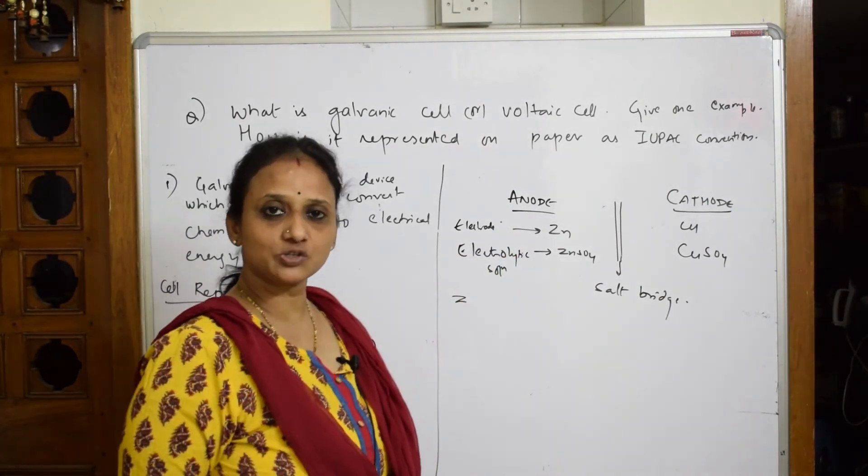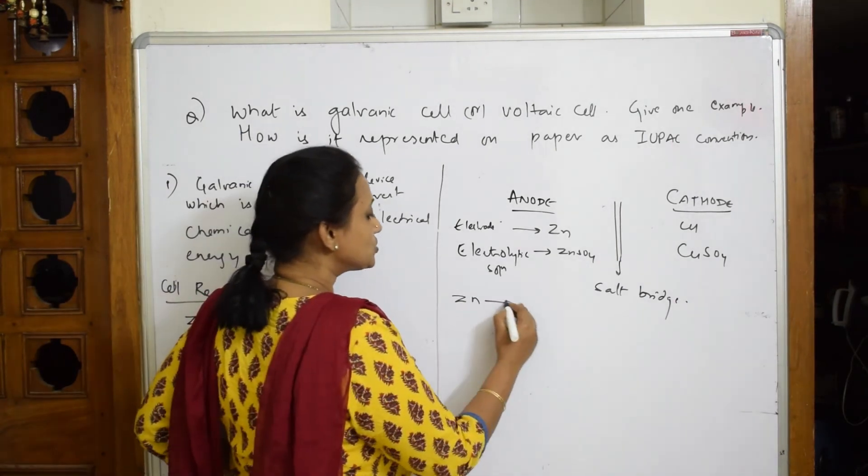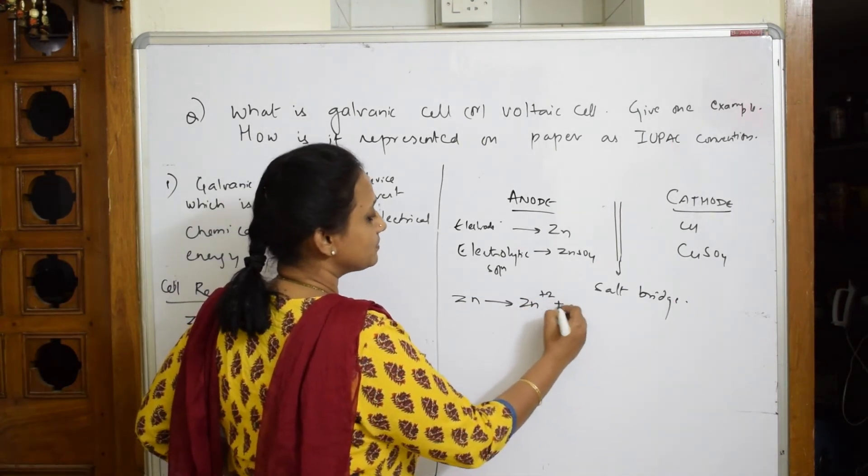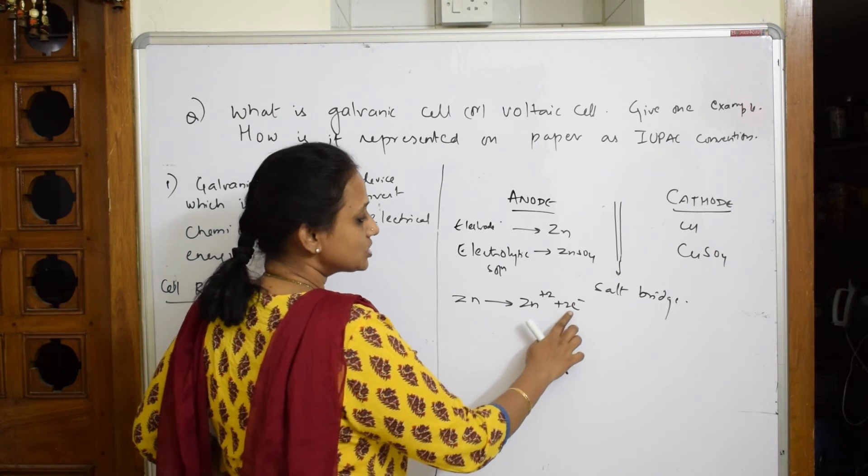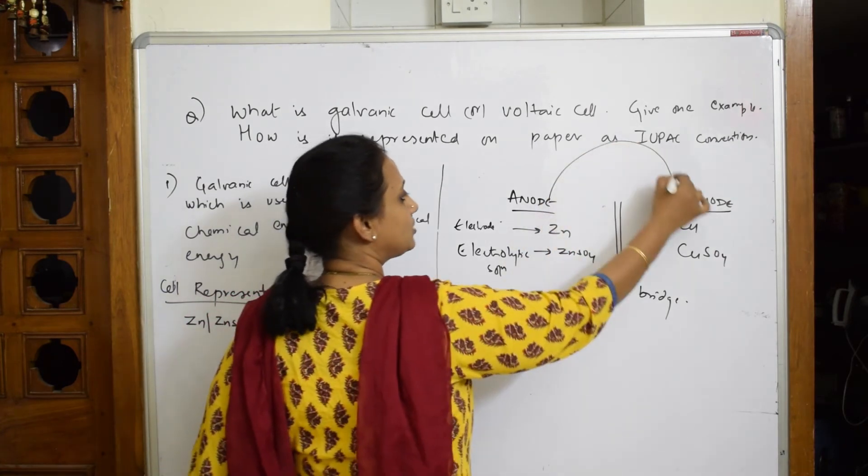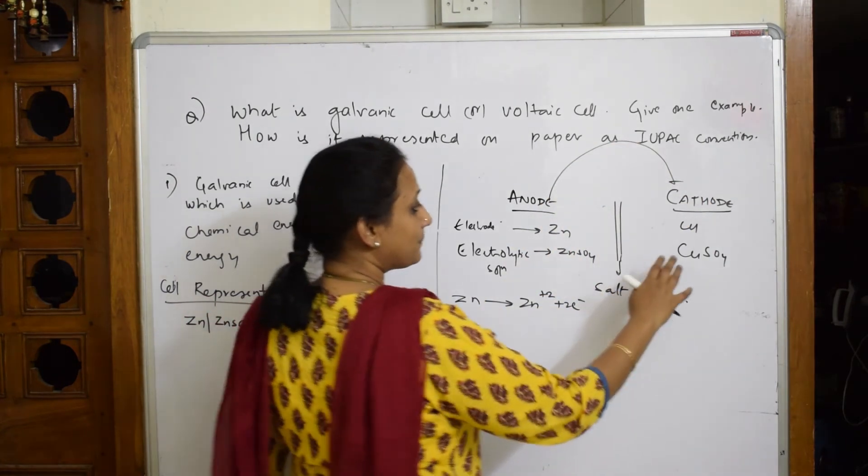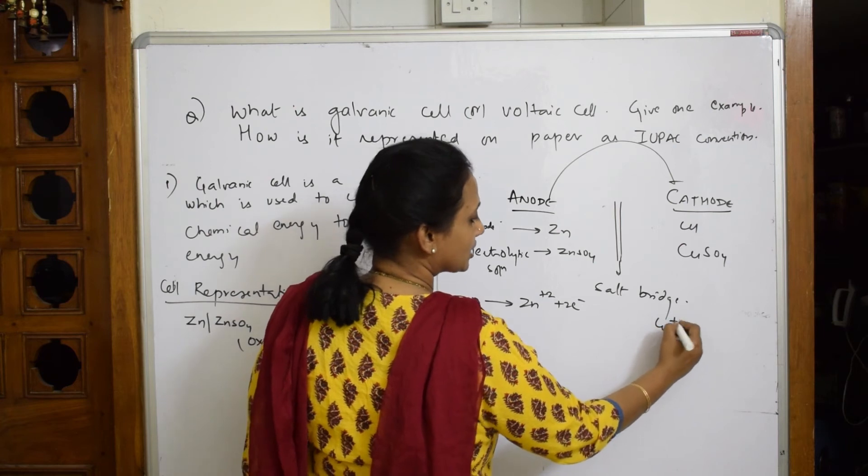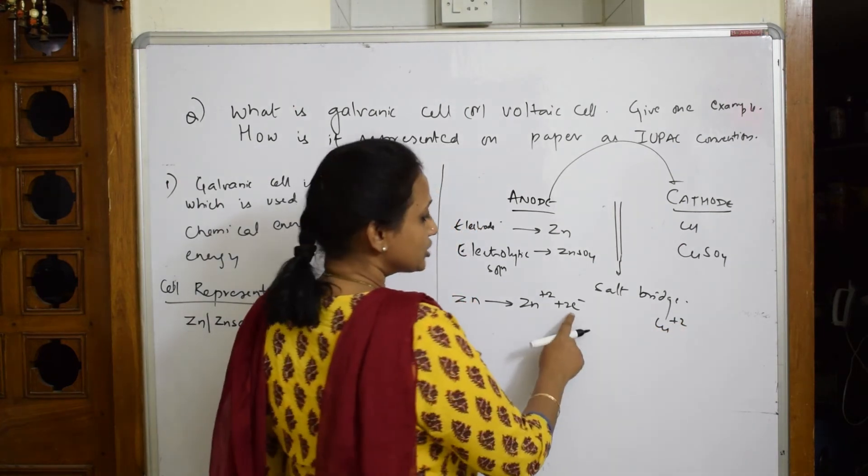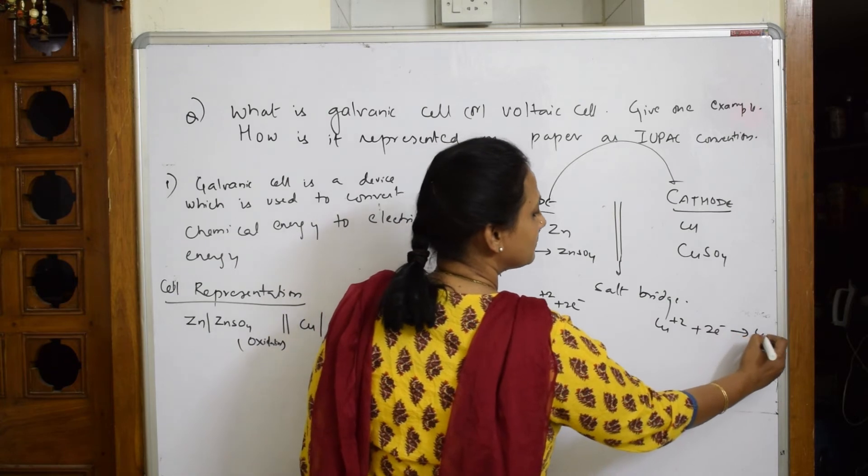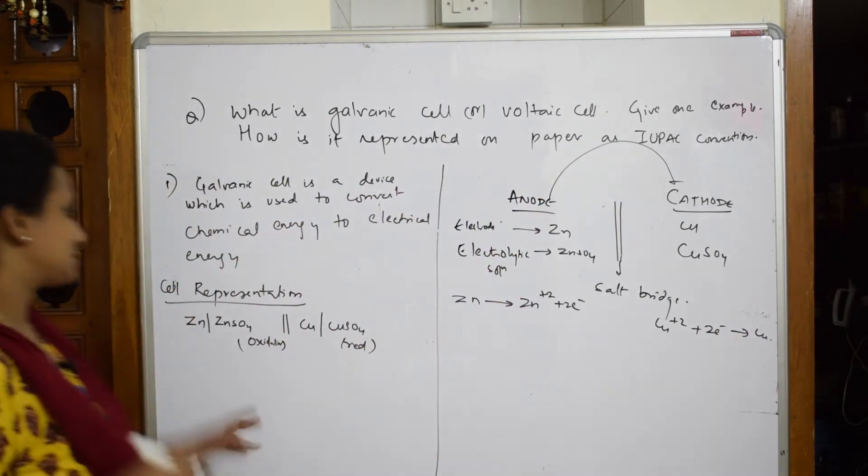Suppose if I have to write in ionic form: zinc, what happens to zinc? Zinc, because anodic compartment, it has to lose electrons. Zinc loses two electrons and forms Zn²⁺. These two electrons from anode are carried to the cathode. What will happen? The copper which is there at cathode, which is electron deficient, is going to pick up these two electrons and becomes copper metal.